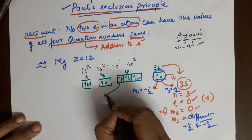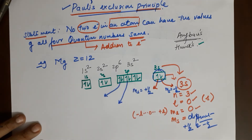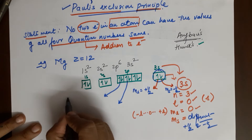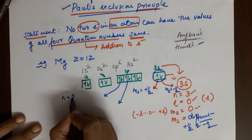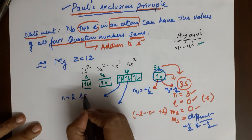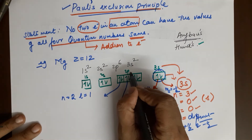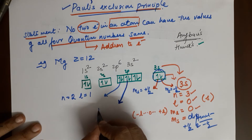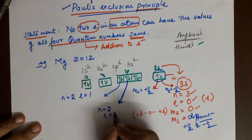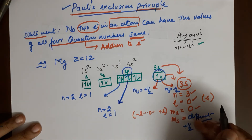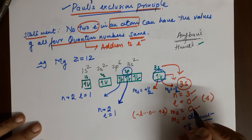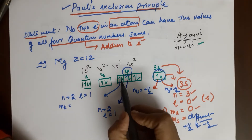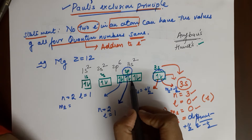Now I'll take another example — this electron and this electron, both in 2p. For the first electron: n = 2 (it is in 2p), l = 1 (it is in 2p). For the second electron: n = 2 and l = 1 as well, since it is also in 2p. Coming to the magnetic quantum number, they are in different orbitals, so the ml value is different.